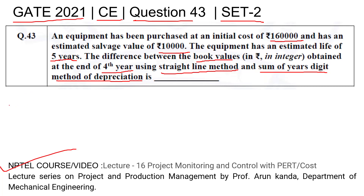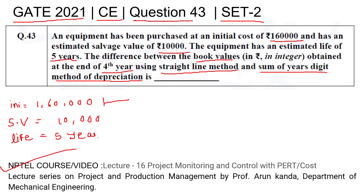The initial cost is 160,000 rupees, the salvage value is 10,000, and the expected life is five years. We need to find the difference between the book value obtained at the end of the fourth year using the straight line method and the sum of years digit method — that is, the book value by straight line method minus the book value by sum of years digit method at the end of the fourth year.